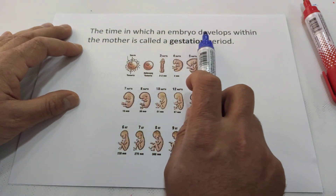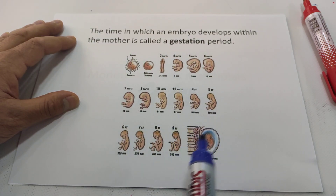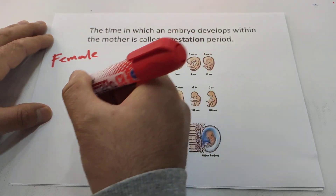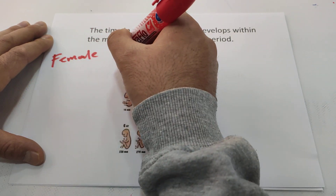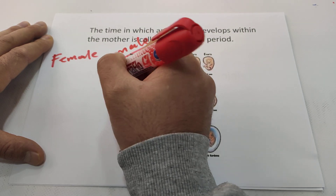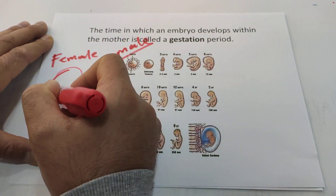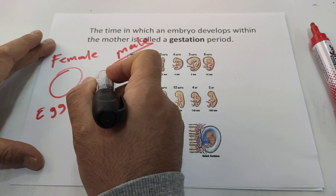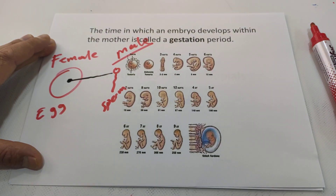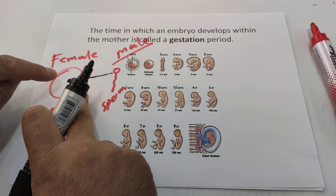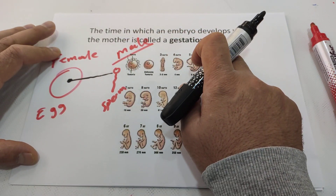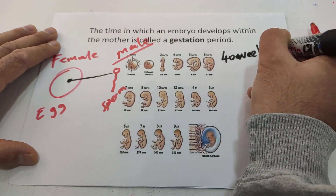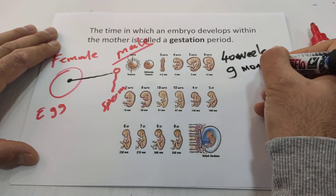The time in which the embryo develops within the mother is called the gestation period. The female has eggs and the male produces sperm — these are sex cells. When the sperm joins the egg, we call this process fertilization. From fertilization up to when the baby is born, we call that period the gestation period. It takes 40 weeks, or nine months and ten days.